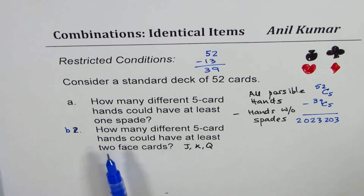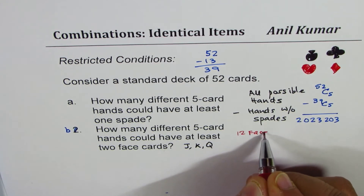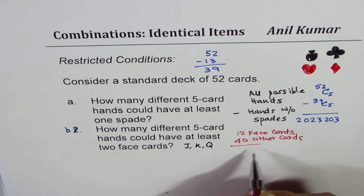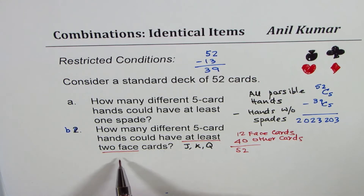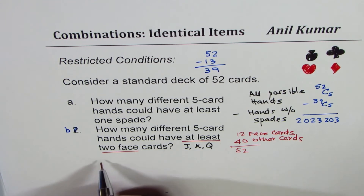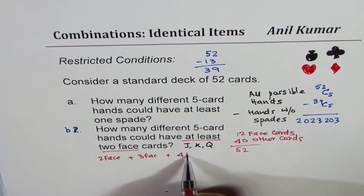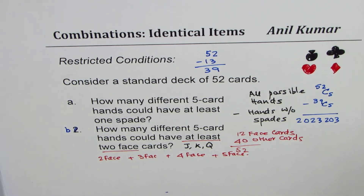Now let's look at Part B: how many different five card hands could have at least two face cards? There are 12 face cards and 40 other cards, since the total is 52. We want at least two face cards, meaning we could have two, three, four, or five face cards. So we have four separate cases to consider.